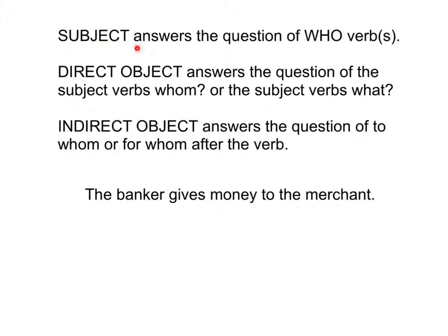The subject answers the question of who does the verb. The direct object always answers the question of the subject verbs whom, or the subject verbs what. The indirect object answers the question of to whom or for whom after the verb.